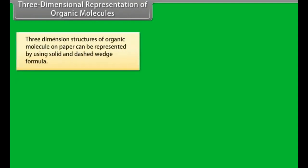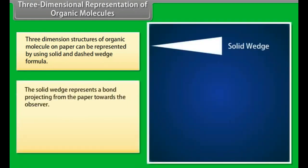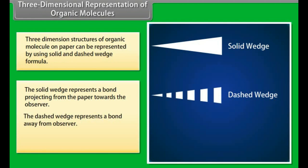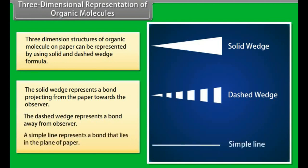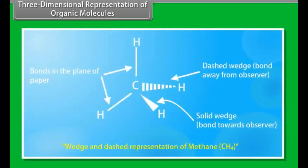Three-dimensional representation of organic molecules: three-dimensional structures of organic molecules on paper can be represented using solid and dashed wedge formulas. The solid wedge represents a bond projecting from the paper towards the observer. The dashed wedge represents a bond away from the observer. A simple line represents a bond that lies in the plane of the paper. For example, methane.